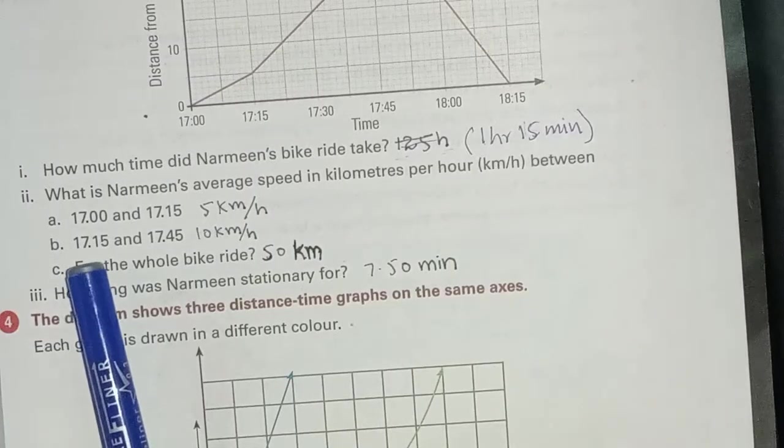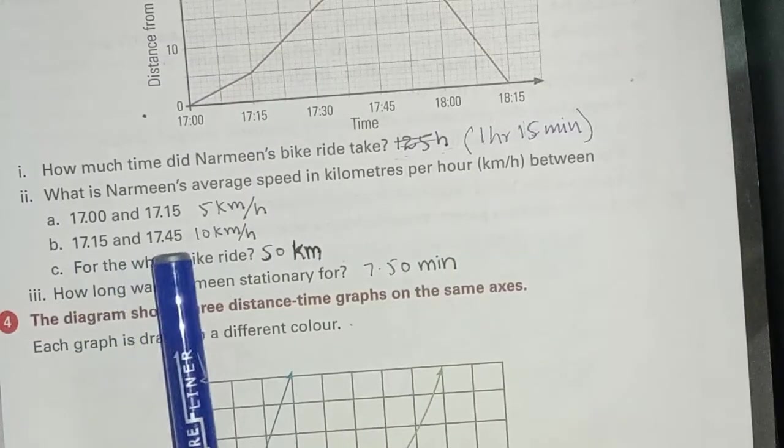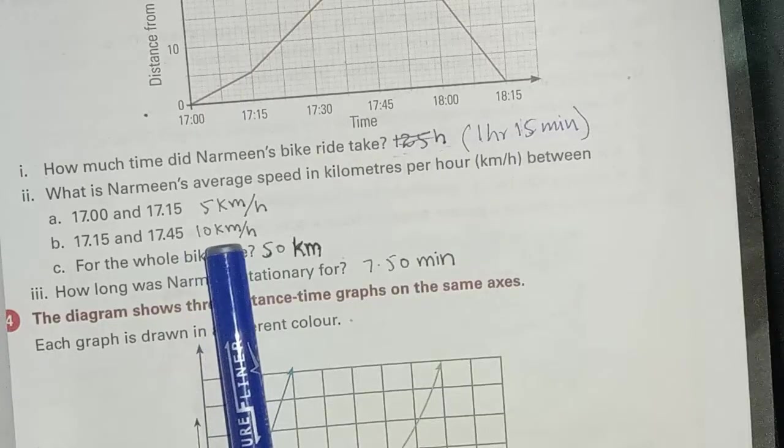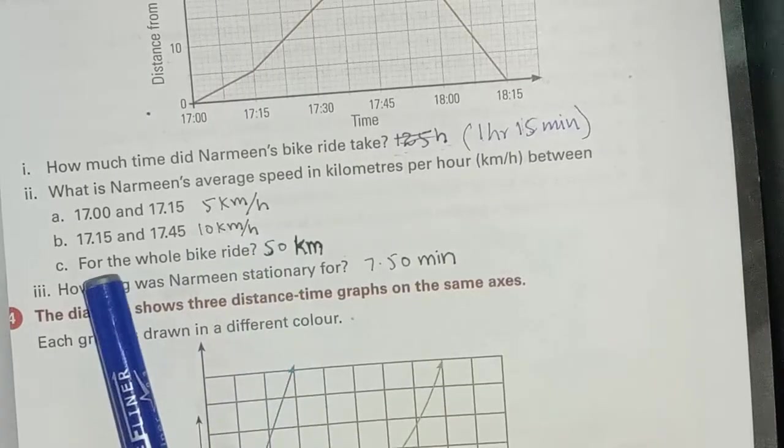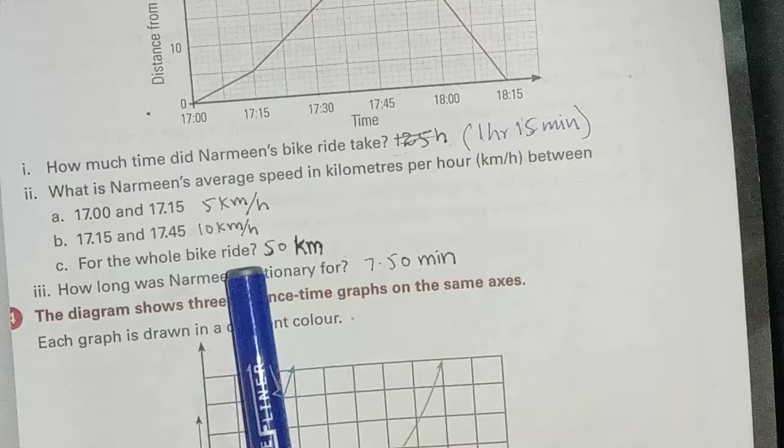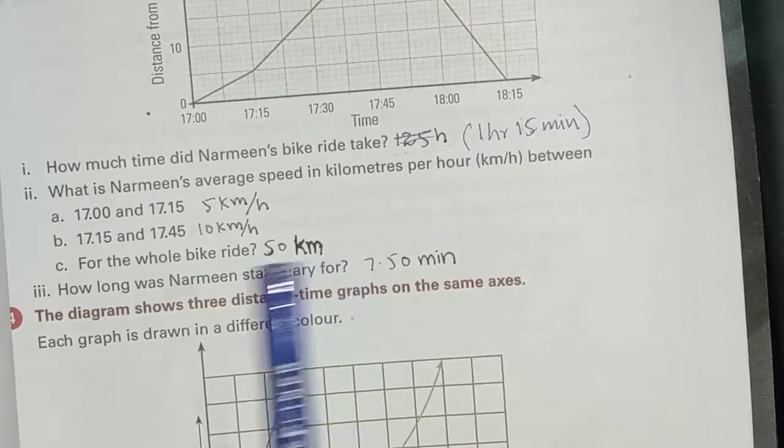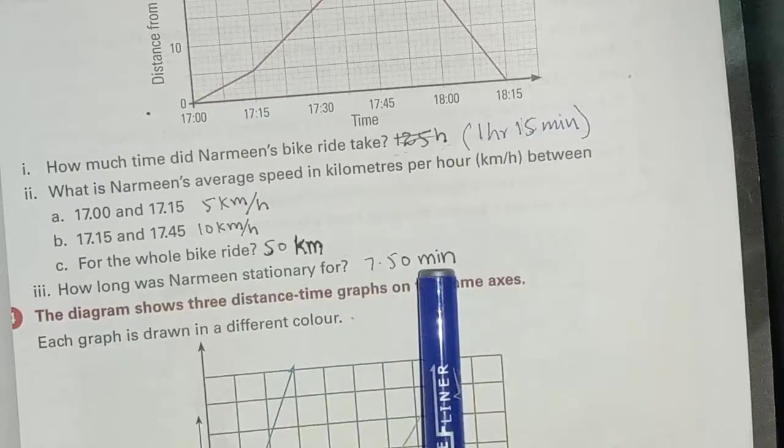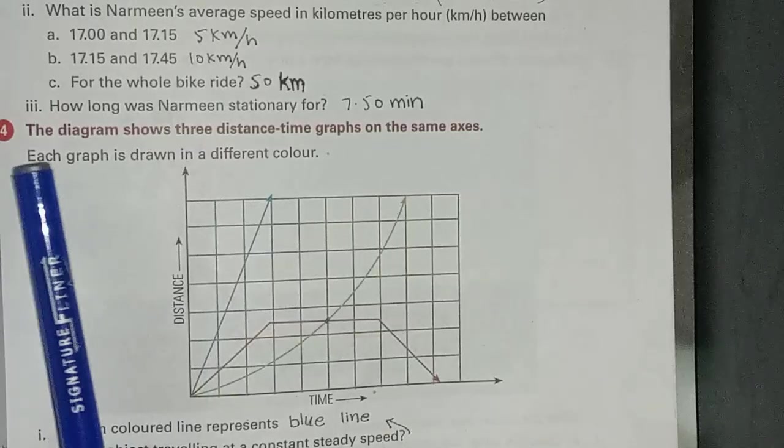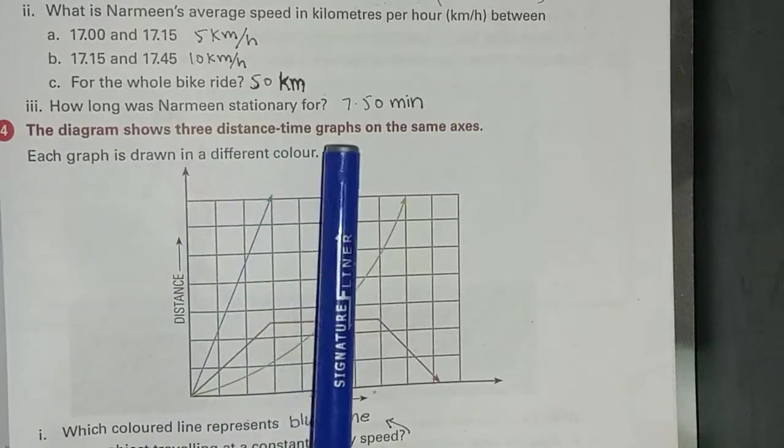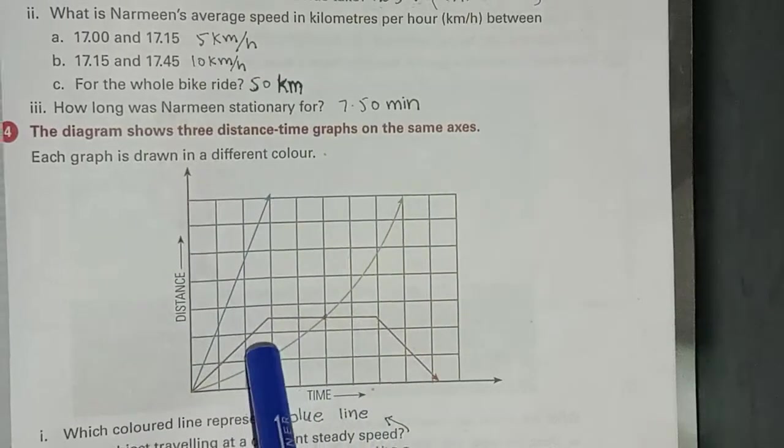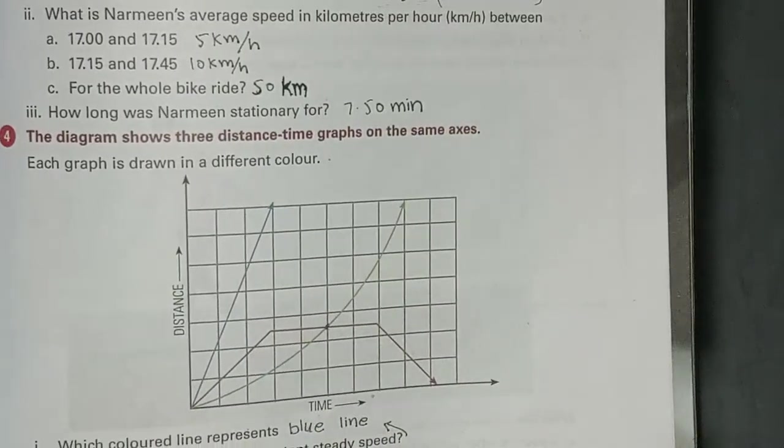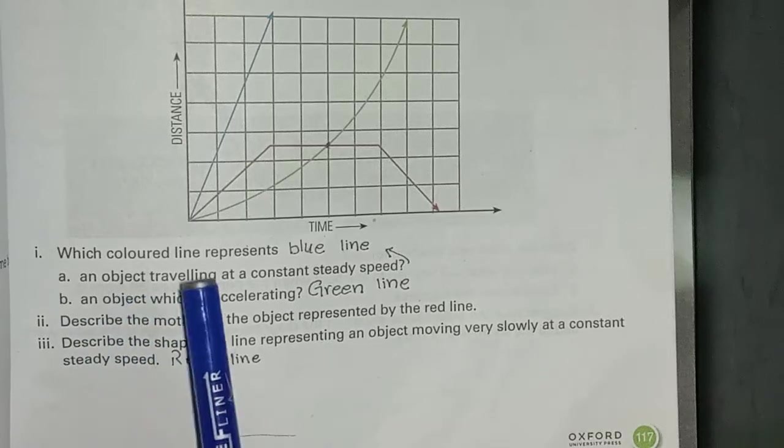And 17:15 and 17:45, the answer is 10 km per hour. For the whole bike ride, 50 km. How long was Nermeen stationary for? Answer: 15 minutes. Fourth question: the diagram shows three distance-time graphs on the same axis. Here we have a graph given. This is a related question. Which colored line represents: